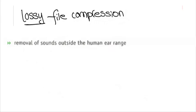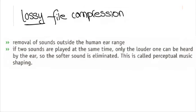Essentially, the algorithm removes sounds that the human ear cannot hear properly. For example, removal of sounds outside the human ear range. If two sounds are played at the same time, only the louder one can be heard by the ear, so the softer sound is eliminated. This is called perceptual music shaping.